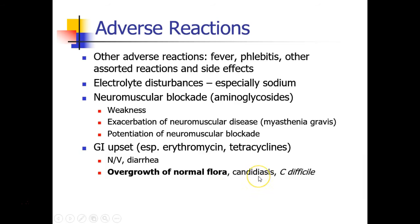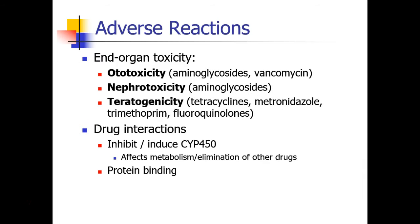The most common examples of overgrowth would be a candidal infection, which is actually a fungal infection, and C. diff, which is a bacterial infection. We can also see toxicity from antibiotics. Organs commonly affected include the ears, or ototoxicity, which occurs with aminoglycosides and vancomycin; nephrotoxicity, occurring with aminoglycosides; and teratogenicity, which is toxicity to the developing fetus, occurring with a number of different antibiotics. Antibiotics can also interact with other drugs, often due to inhibition or induction of cytochrome P450 subtypes, which affects the metabolism and elimination of other drugs. And antibiotics can displace other drugs from their protein binding sites.